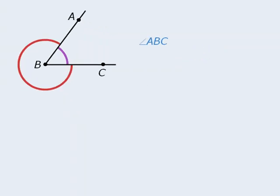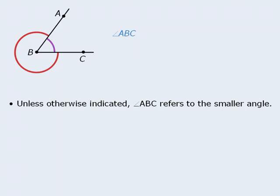Well, when it comes to labeling angles, the rule is that unless otherwise indicated, an angle expressed in this form always refers to the smaller angle. That is, the angle that is less than 180 degrees. So here, angle ABC refers to this angle.